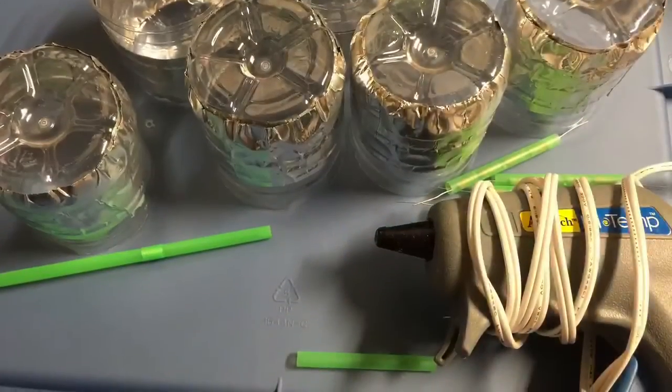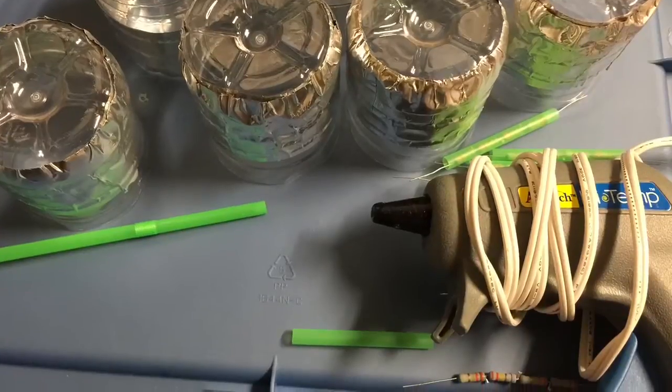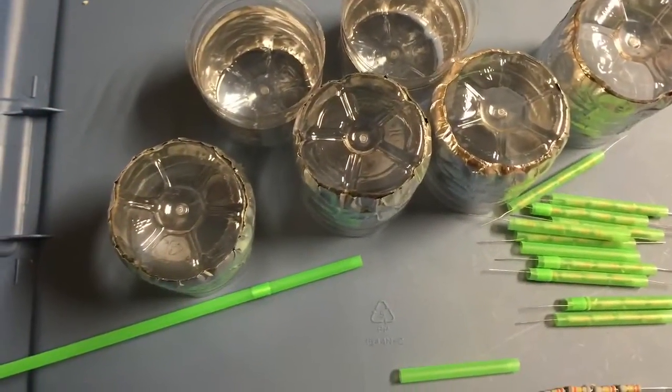So I thought of a different approach in this video. It's very easy to make high voltage capacitors from baking foil on old water bottles, as you can see here.